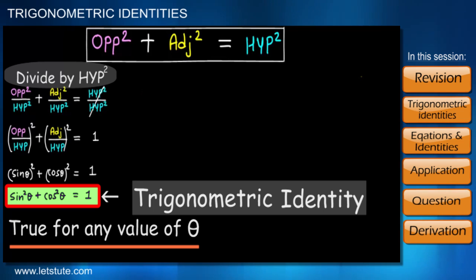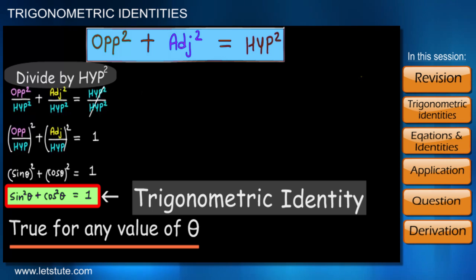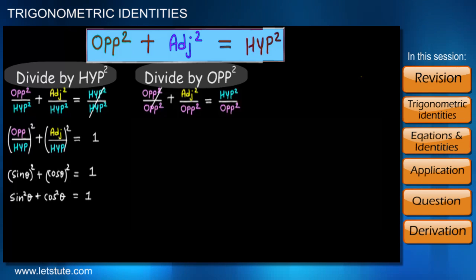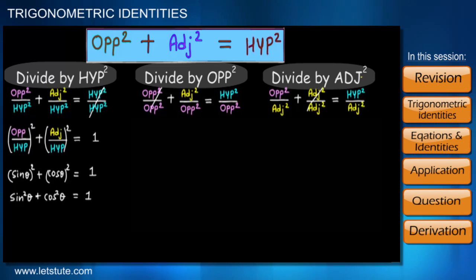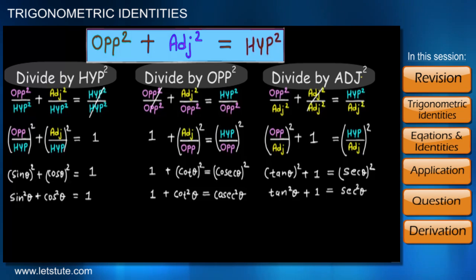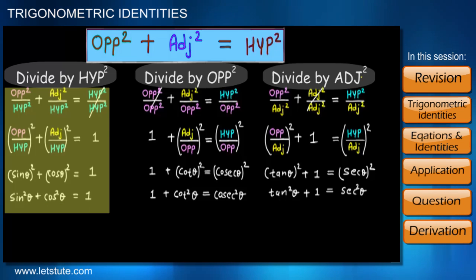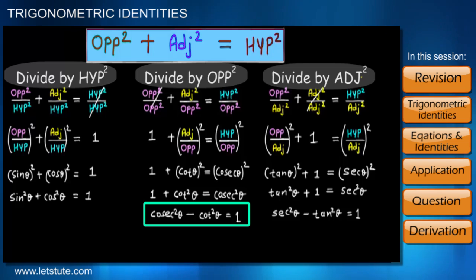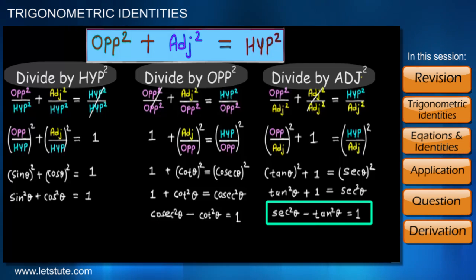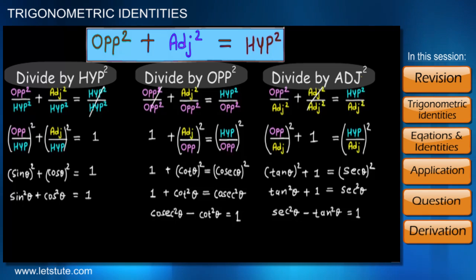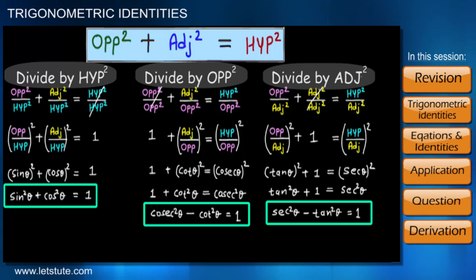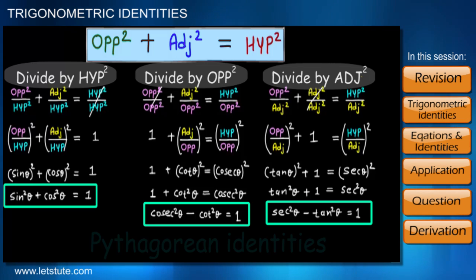Just like this, we can again make use of Pythagoras theorem to get two more identities. All we have to do is divide the same Pythagorean relation once by opposite side squared and then by adjacent side squared, following the same steps as before. This gives us cosec²θ − cot²θ = 1 and sec²θ − tan²θ = 1. Since Pythagoras theorem is the first step in deriving all three identities, they are also called Pythagorean identities.